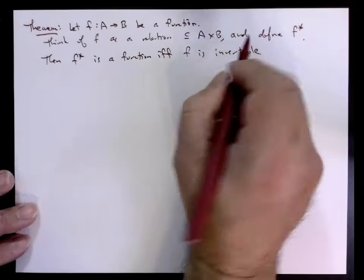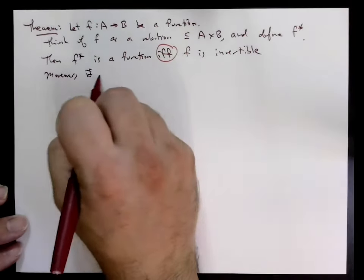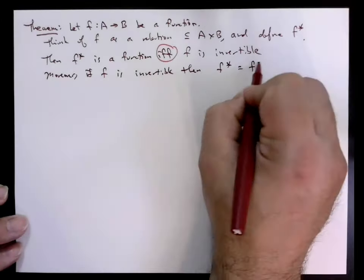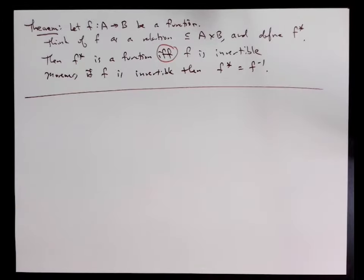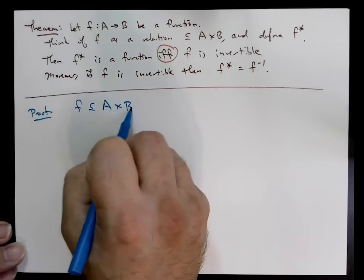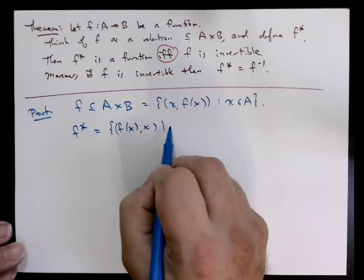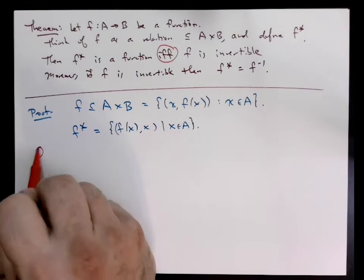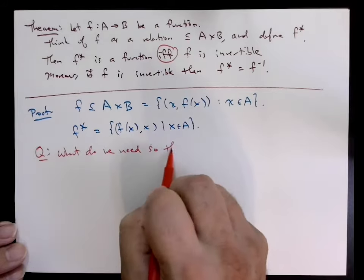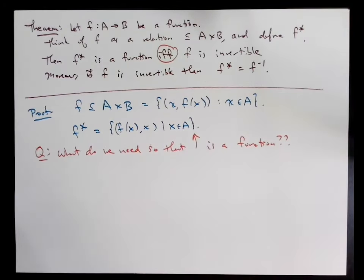Let F be a function from A to B. Then F* is also a function if and only if F is bijective, or invertible. And when F is bijective, F* is exactly the graph of F inverse. Basically, the star and the inverse coincide when we're talking about an inverse function.